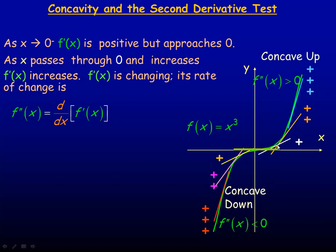Where the first derivative is increasing, its rate of change — the second derivative — would be positive. Down here where it's concave down, the first derivative is positive but it's getting smaller, so the rate of change of the first derivative would be negative; the second derivative would be negative. So where the second derivative is negative, the graph is concave down. Where the second derivative is positive, the graph is concave up. A lot of people talk about tangents above or below the curve: where it's concave down, the tangents are above the curve; where it's concave up, the tangents are below the curve.